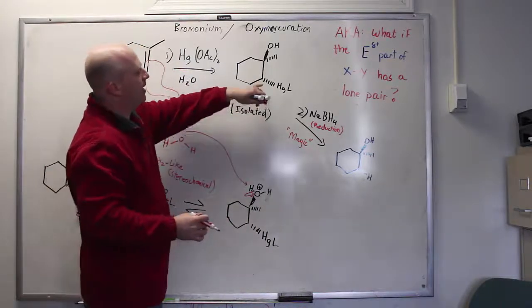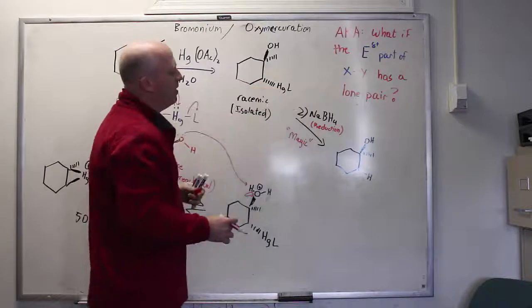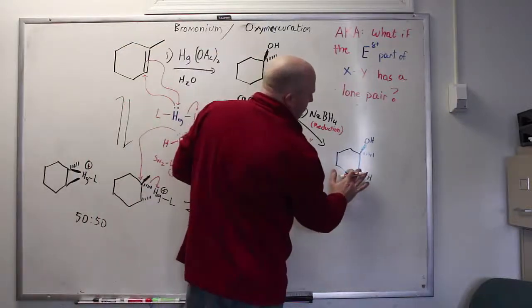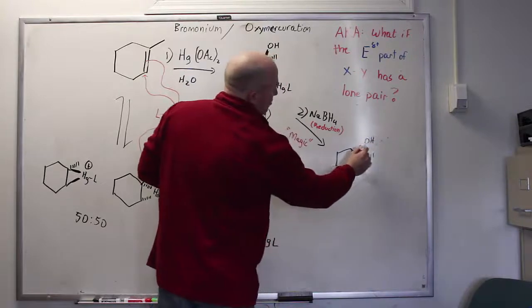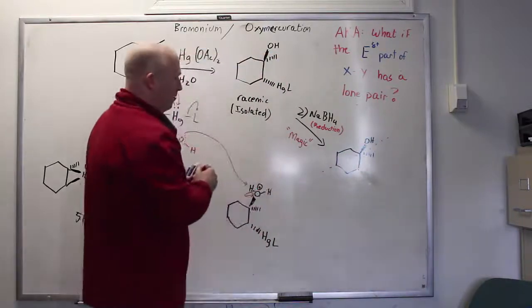And what we do is we take this racemic mixture and remove the thing that's making it possible to distinguish between the two enantiomers. What we now have is a plane of symmetry right here. This is an achiral molecule.